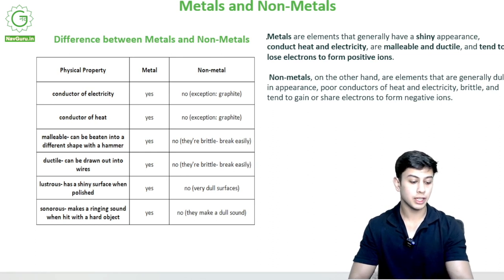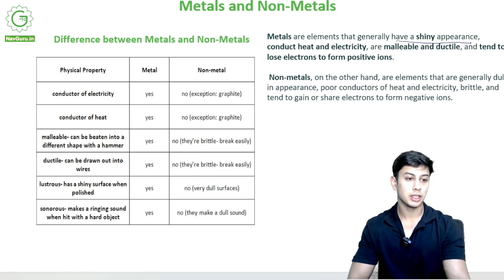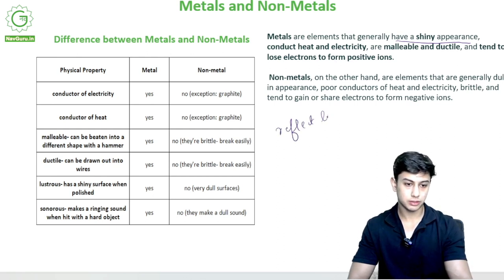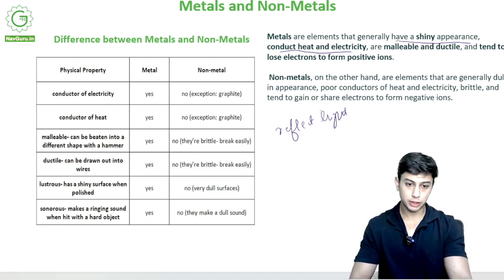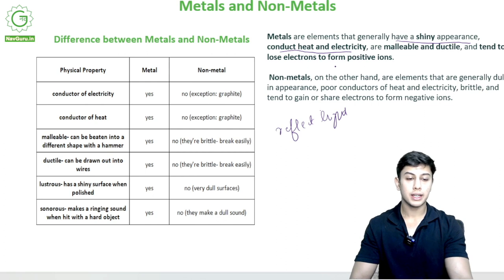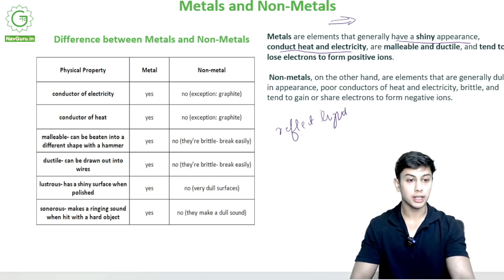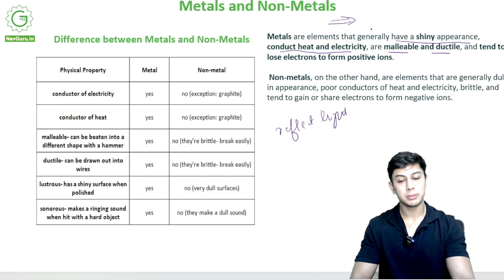Metals are elements that generally have a shiny appearance — they reflect light. They conduct heat and electricity: metals will allow heat and electricity to pass through them. For example, iron as a metal can get hot to a very high temperature, and it can also conduct electricity. Now, malleable and ductile — malleable means we can take a hammer and beat this metal into thin sheets.